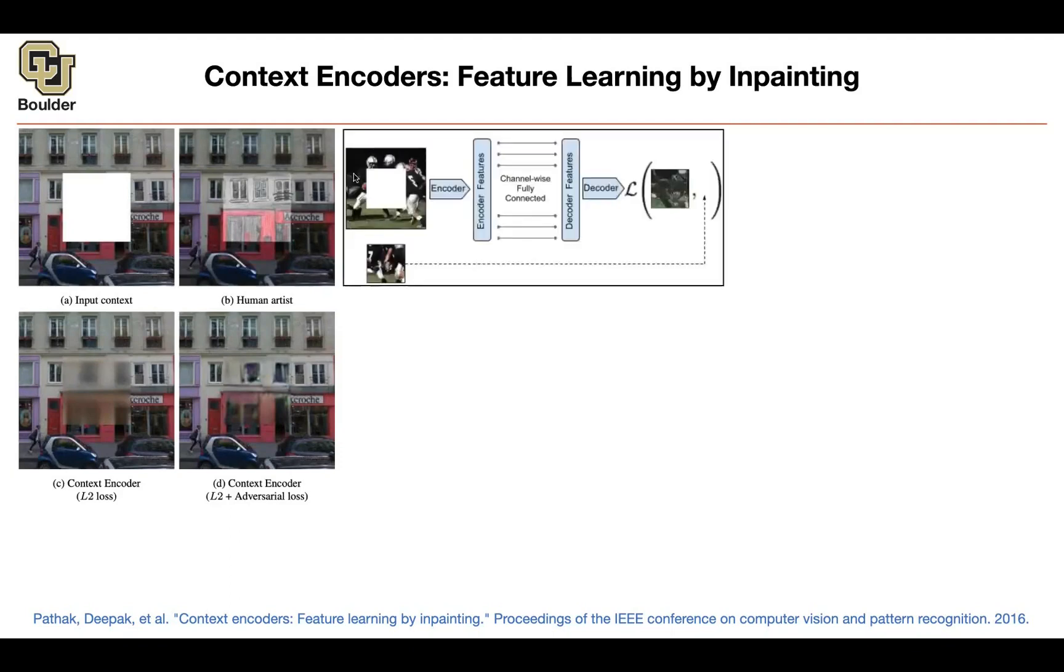What are we going to do? You take the context of your image. This is the context. This is the missing part. And your task is to predict the missing part. You're going to put a neural network, an encoder that is going to take this image. The context is 227 by 227 by three channels, red, green, blue. That's your image.